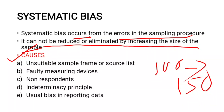So what are the causes of systematic bias? The first cause is the use of a faulty sampling frame. A sampling frame is a source list — it is a list of each and every member of the population. If the sampling frame is defective, it introduces systematic bias. The second cause is the use of faulty measuring devices.